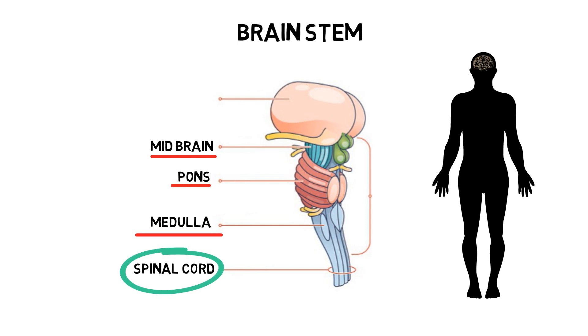The brain stem controls the flow of messages between the brain and the rest of the body. It also controls consciousness, whether one is awake or sleepy.